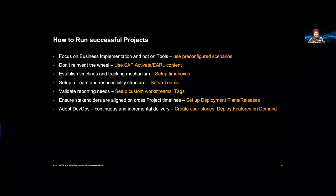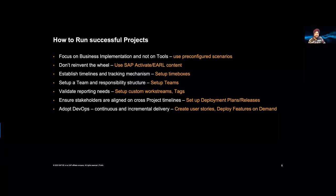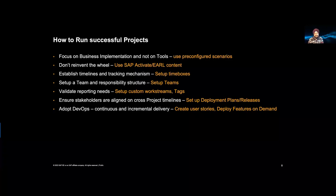We have rich content coming from two main sources: SAP Activate content for tasks, and the Enterprise Architecture Reference Library for the process part. You get a fantastic starting point from SAP — accelerators that give you a head start without creating content from scratch. In the project, we have a mechanism to set up time boxes and a responsibility structure called 'teams'. You can also create your own custom work streams, tags, and similar elements to represent or manage things your way.